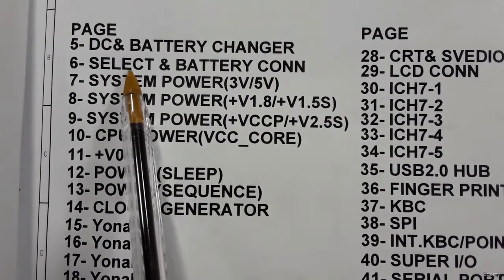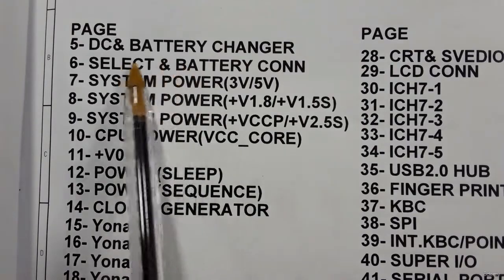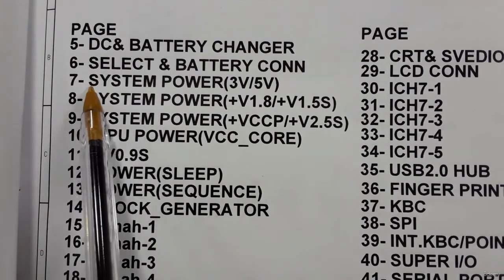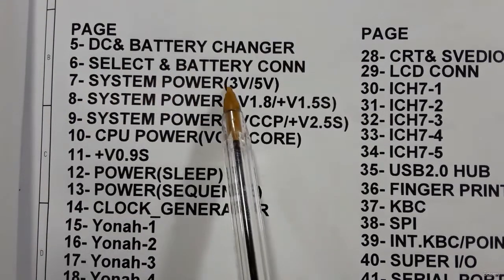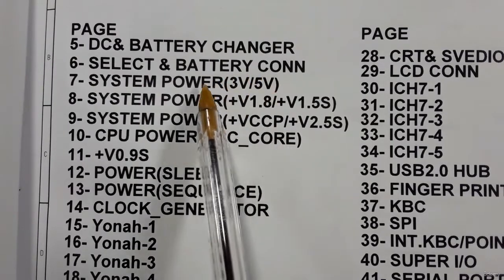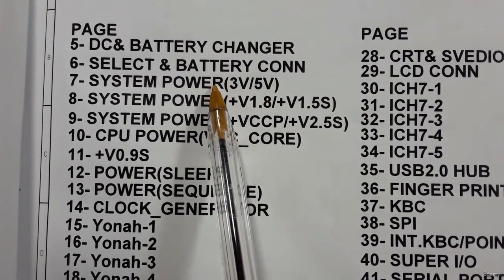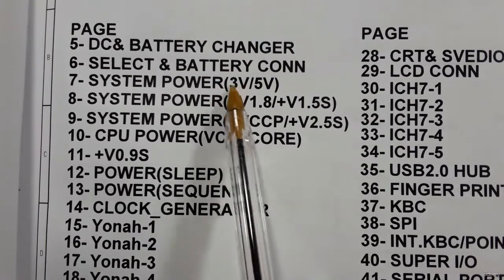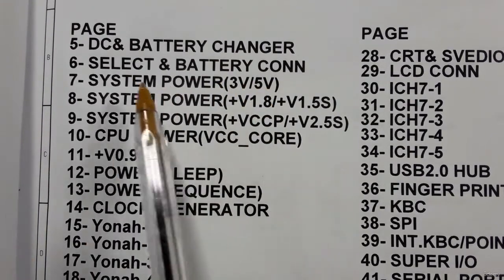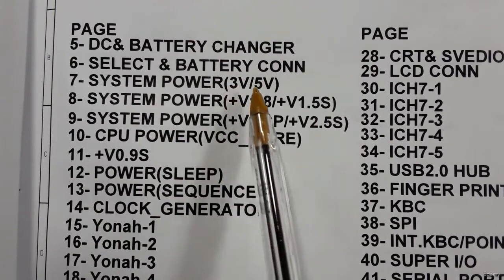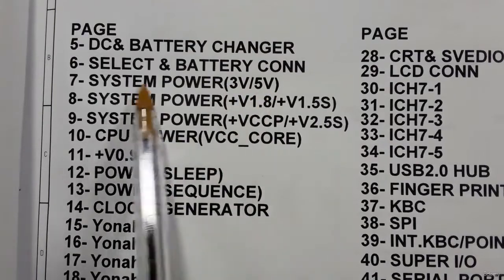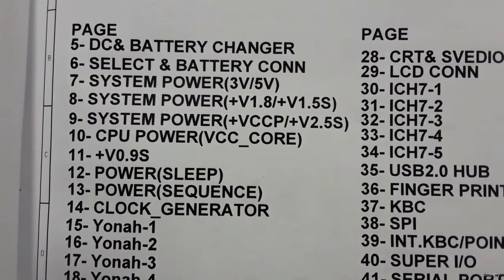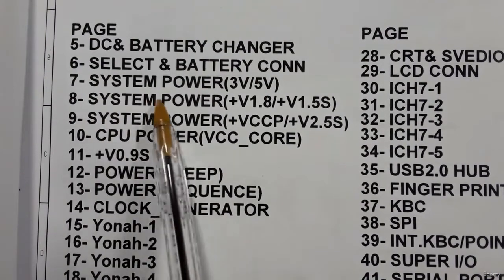On page six we have the system power three volt and five volt circuit, along with the select and battery connector. This is the circuit where we get three volts and five volts.